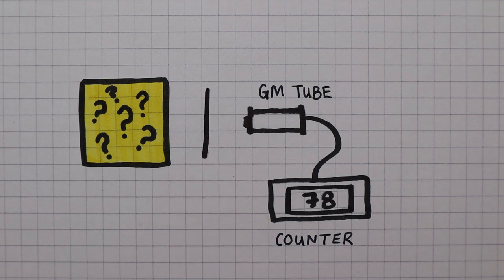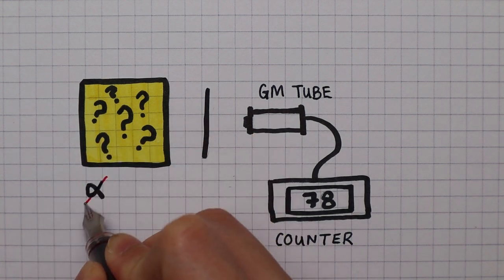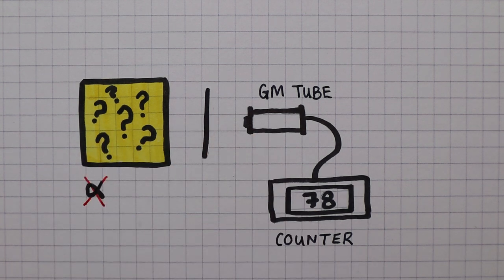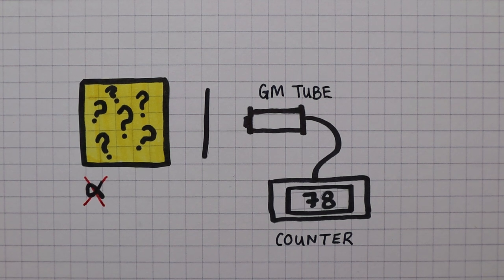When paper is placed in between the two, the count rate stays roughly at 78 counts per minute. This tells us that the source is not emitting any alpha particles. Otherwise, the paper would have absorbed the radiation so that the count rate would have dropped significantly.